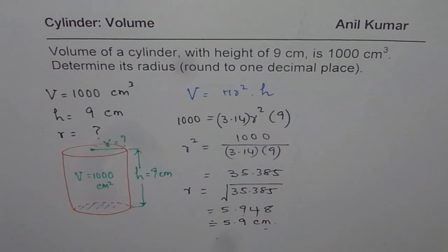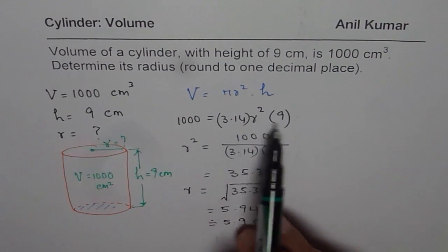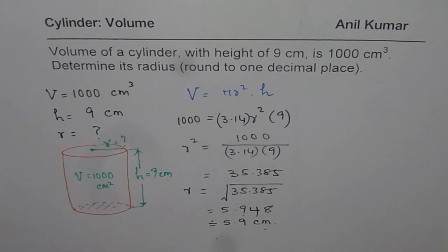So I hope this set of calculations is absolutely clear to you. Some of you can actually multiply 9 by 3.14 and then divide 1000 by that number. Well, one and the same thing.